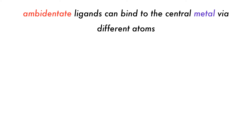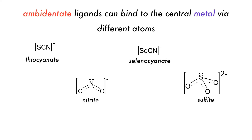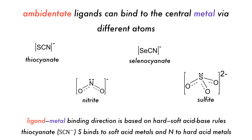Ambidentate ligands, such as thiocyanate, nitrite, selenocyanate, and sulfite, are capable of binding to the central metal via different atoms. Which atom binds to the central metal typically follows the rules of hard-soft Lewis acid-base theory. For example, thiocyanate binds through the S atom to soft acid metals and through the N atom to hard acid metals.